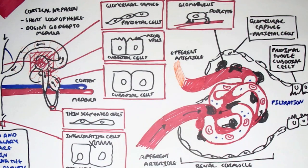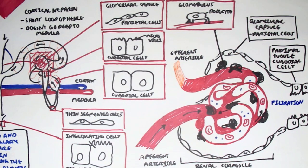The glomerulus forms a Bowman's capsule, which I'll talk about in the next video, and is for filtration. In the next video we're going to talk about the physiology of the nephrons and all other interesting stuff that occurs there. Hope you enjoyed it - please like, comment, and provide feedback if possible. Thank you very much.